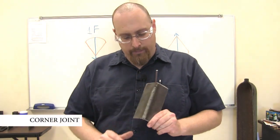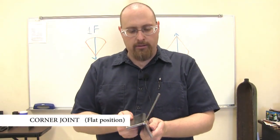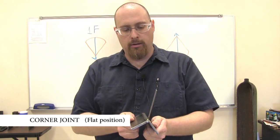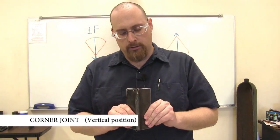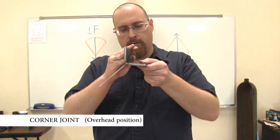Our outside corner joint. Flat anywhere in here, horizontal, vertical, and our overhead.